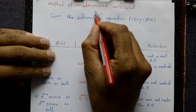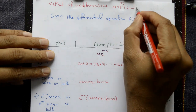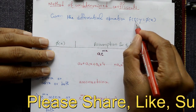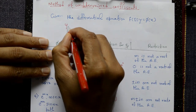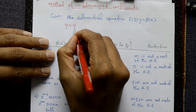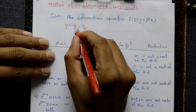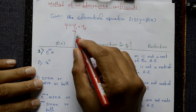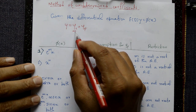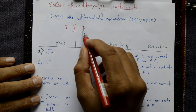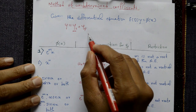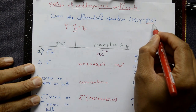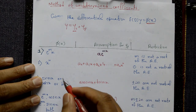Method of Undetermined Coefficients. Given the differential equation f(D)y = φ(x), find the general solution: y = complementary function + particular integral. First, find the complementary function by finding the roots — equal roots, not equal roots, complex roots. Then find the particular integral. We assume a form for the particular integral involving constant coefficients depending on the nature of φ(x).